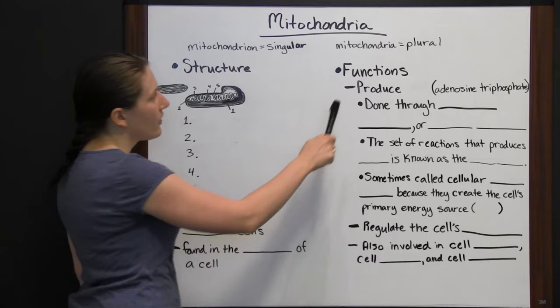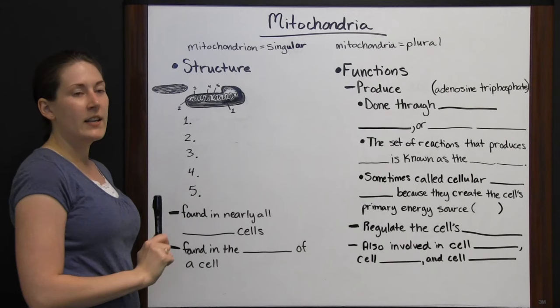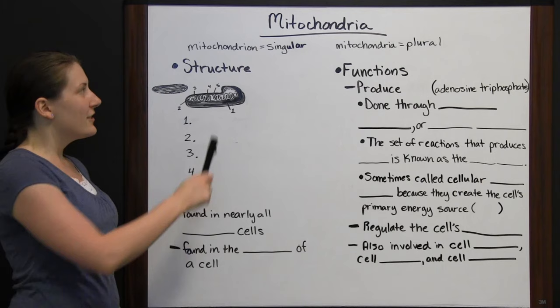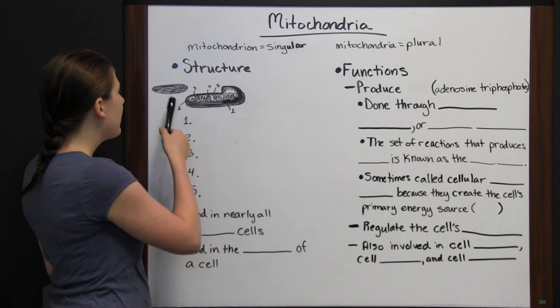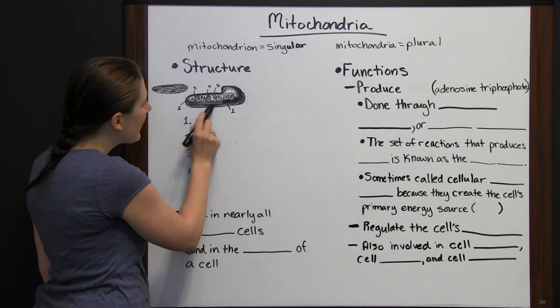Mitochondria is the plural form; the singular is mitochondrion. Looking at the structure: in cross-section, you'll see a squiggly membrane going through the middle. The outer layer is called the outer membrane.